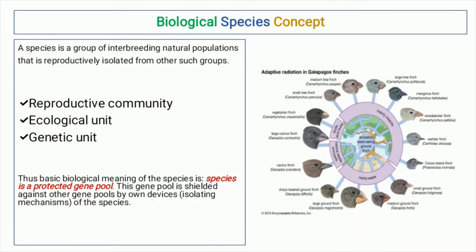In this video we will talk about the biological species concept. According to this concept, a species is a group of interbreeding natural populations that is reproductively isolated from other such groups. So according to this, a species acts as a reproductive unit, ecological unit, and a genetic unit. It can be said that a species is a protected gene pool, meaning its genetic makeup is not exchanged with other species.